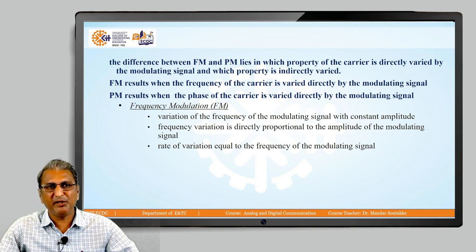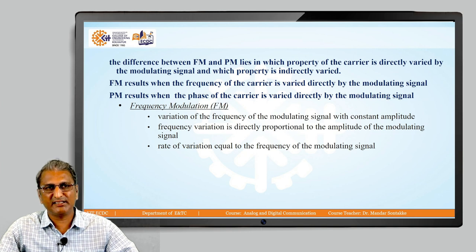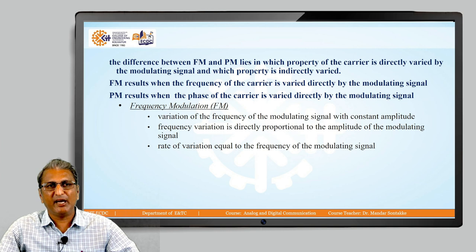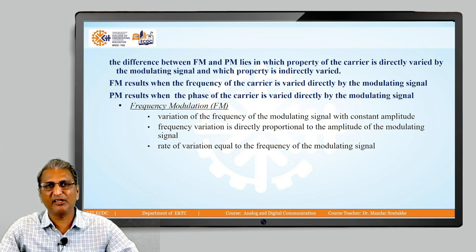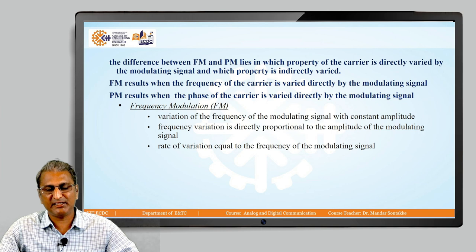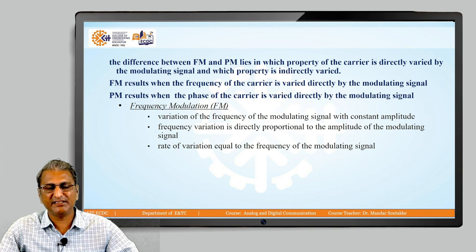The difference between FM and PM lies in which property of the carrier is directly varied by the modulating signal and which property is indirectly varied. FM results when the frequency of the carrier is varied directly by the modulating signal, and PM results when the phase of the carrier is varied directly by the modulating signal.